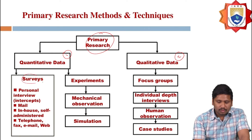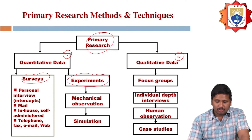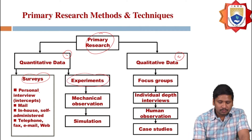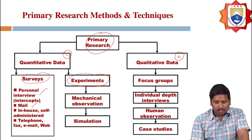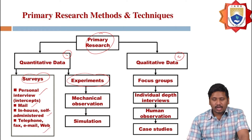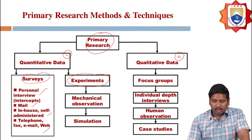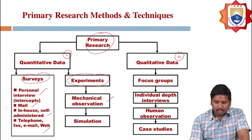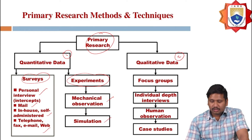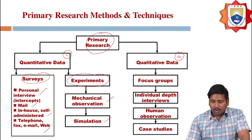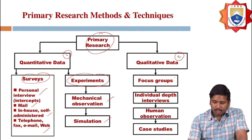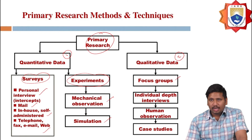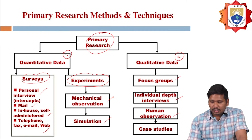For quantitative data, we can collect it through surveys or experiments. Surveys can be conducted through personal interviews, mail, in-house, self-administered, telephone, email, or web. Experiments can be done through mechanical observation or simulation. For qualitative data, we can get data from focus groups, individual depth interviews, human observations, and case studies.